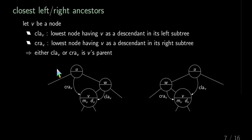The first definition are the closest left and right ancestors. So given the node V, we have the notions of clay and cray. Clay like clay soil and cray like crayfish. Clay is the lowest node having V as a descendant in its left subtree. You can see here that W is the clay of V.